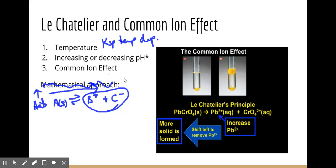Temperature's effect on K works the same way for KSP as it does for KC and KP. If I'm shifting toward products, K increases. They might add the extra question of whether this will be more or less soluble — always remember that shifting toward the product side means you are becoming more soluble because you have more ions. For questions on temperature, endo, and exo effects, refer to the general equilibrium Le Chatelier video.